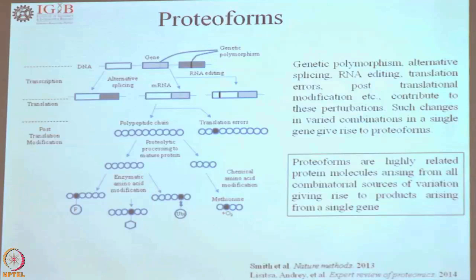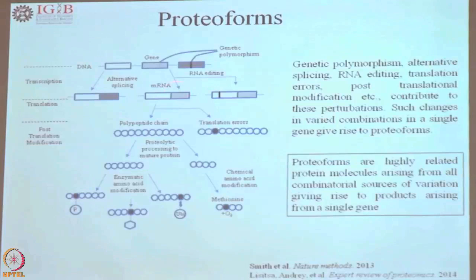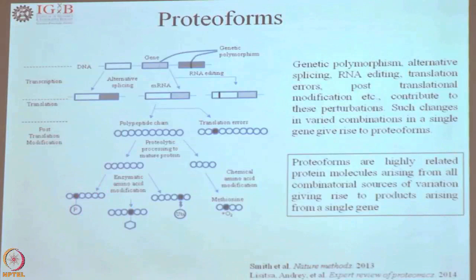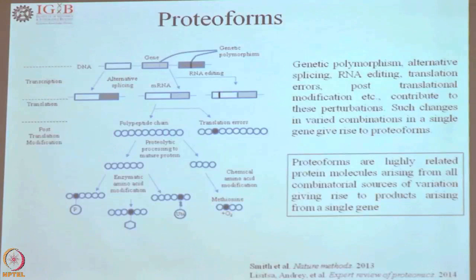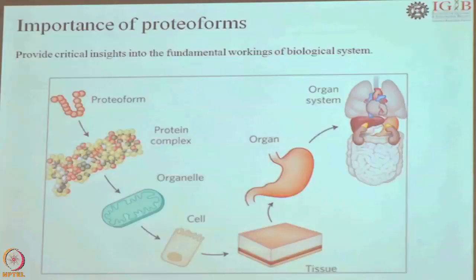Proteoforms are all the alternate forms of a protein which can arise because of alternate splicing of mRNA, any variation or translational errors, and even amino acid modifications — all of them together can lead to generation of a variety of proteoforms of the same protein. All this while we have been talking about the missing protein. We had a catalogue of human proteins and were looking for what proteins have transcript evidence but do not have protein evidence. From there we move to identify all the proteoforms. There are expected to be around 1 lakh proteoforms, and the discovery of these proteoforms can give a better understanding of the functioning of tissues.